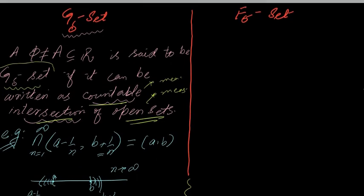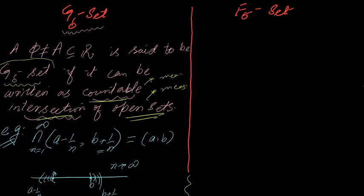On the other hand, let us discuss the F-sigma set. What is an F-sigma set? If any set can be expressed as a countable union of closed sets, then it is said to be an F-sigma set.